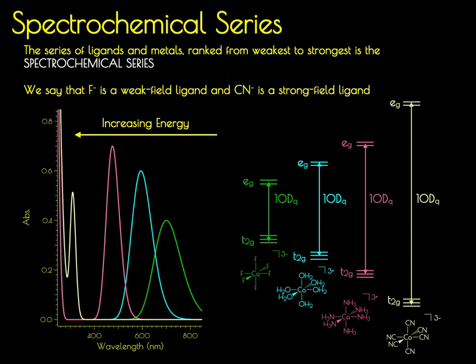What we have done here is created a small spectrochemical series — a series of ligands that influences the value of 10DQ and hence the molecular and spectroscopic properties of the molecule. In this series, fluoride is a weak field ligand and cyanide is a strong field ligand. Fluoride produces a small value of 10DQ, so a small splitting between the T2G and EG sets, while cyanide generates a large value for 10DQ, so a large splitting between the T2G and the EG sets. What we see here for the cobalt-3 complex holds in general across all transition metal compounds.